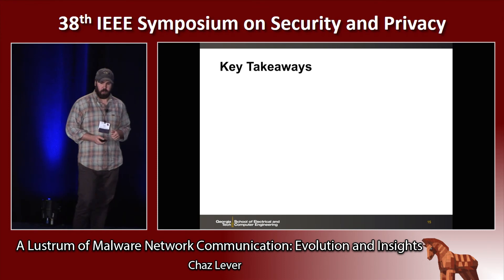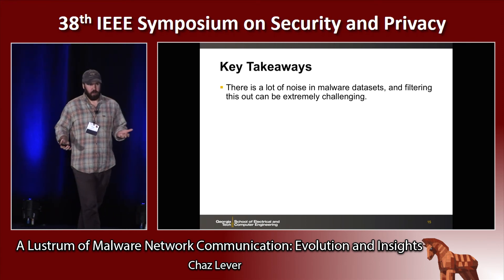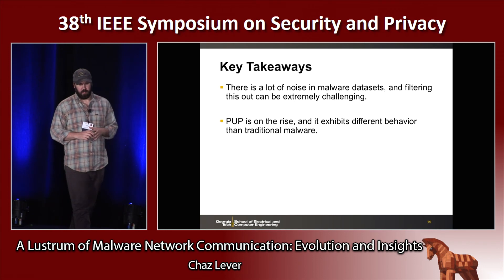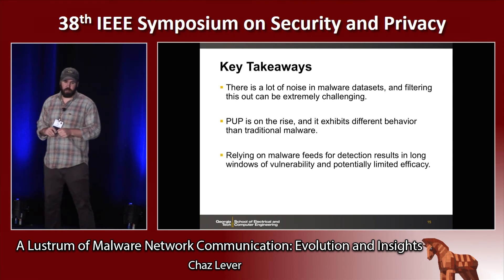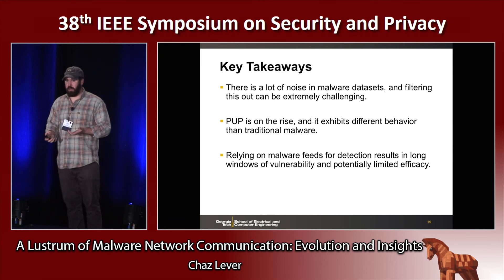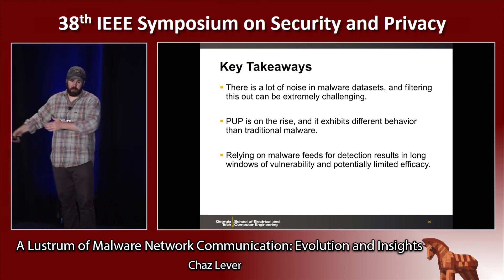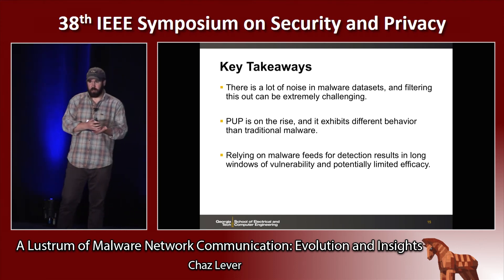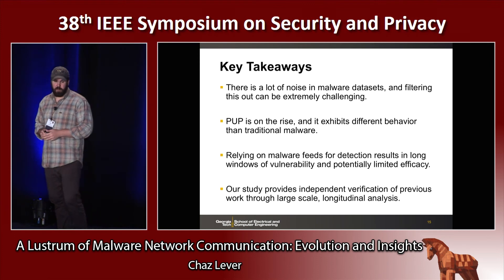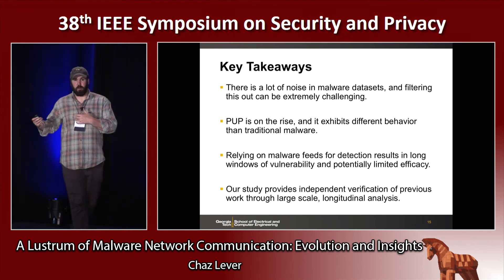Some key takeaways from this work: there's a lot of noise in malware data sets, and filtering it out can be extremely challenging — we provide a blueprint others could use to filter these data sets down to more useful information. We also saw that PUP is on the rise and exhibits different behavior than traditional malware. Relying on malware feeds for detection results in long windows of vulnerability and potentially limited effectiveness, due to domain polymorphism and the lag between seeing abuse on the network and waiting for the binary to show up in a malware feed. Lastly, we were able to provide independent verification of previous results on large, independent data sets.